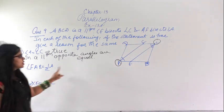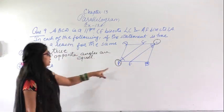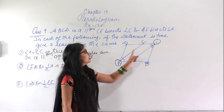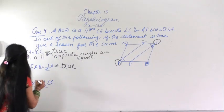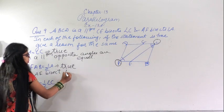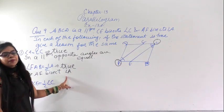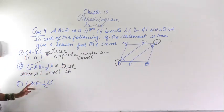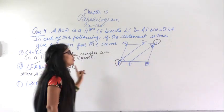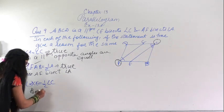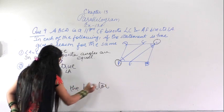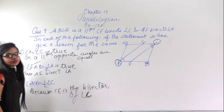The second statement is angle FAB equals half of angle A. This is true because AF is the bisector of angle A. The third statement is angle DCE equals half of angle C. This is true because CE is the bisector of angle C.